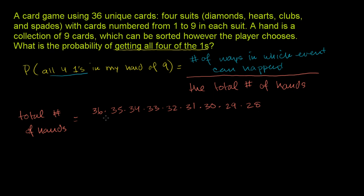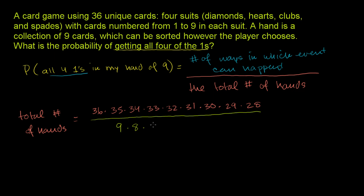But we know that we don't care about the order. All we care about is the actual cards that are in there. So we're over counting here — we're over counting for all of the different rearrangements that these cards would have. It doesn't matter whether the ace of diamonds is the first card I pick or the last card I pick. So what we have to do is divide by the number of ways you can arrange nine things: nine in the first position, then eight, then seven, and so forth — essentially nine factorial. And this is essentially 36 choose 9.